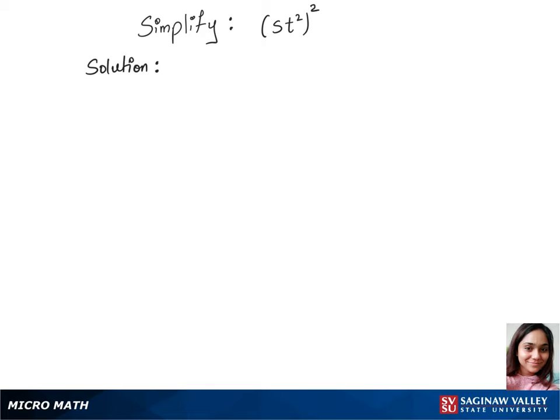To simplify this question — s times t squared, whole squared — we'll use the product rule.